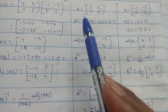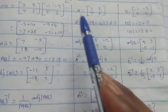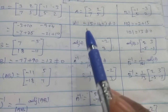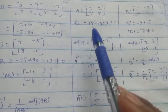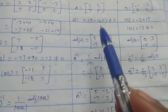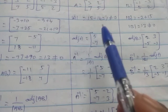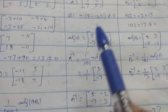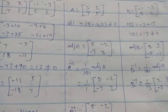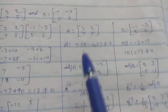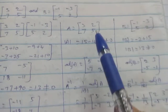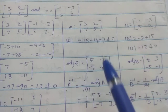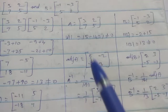Next, A equals [3, 2; 7, 5]. Determinant of A equals 3 into 5 is 15, minus 7 into 2 is 14. So 15 minus 14 equals 1, which is not equal to 0. Adjoint of A: leading diagonal interchange gives 5, 3. Another diagonal sign change gives minus 2, minus 7.